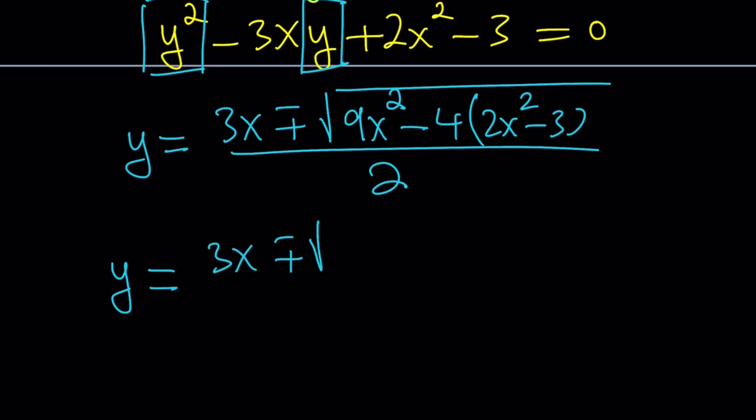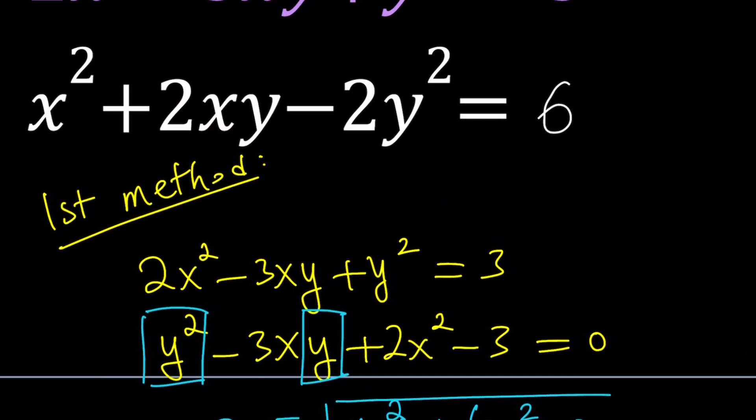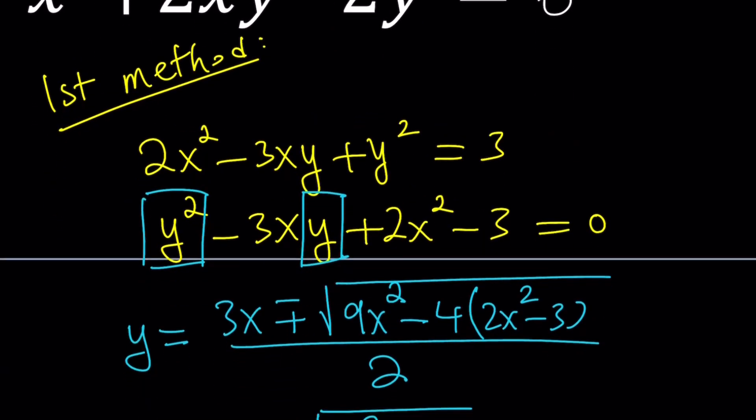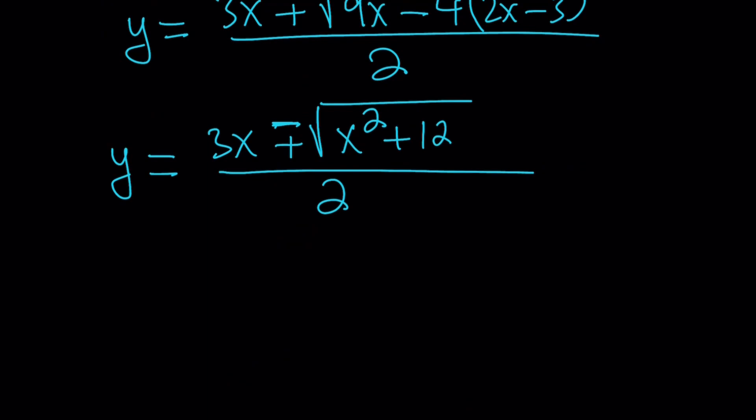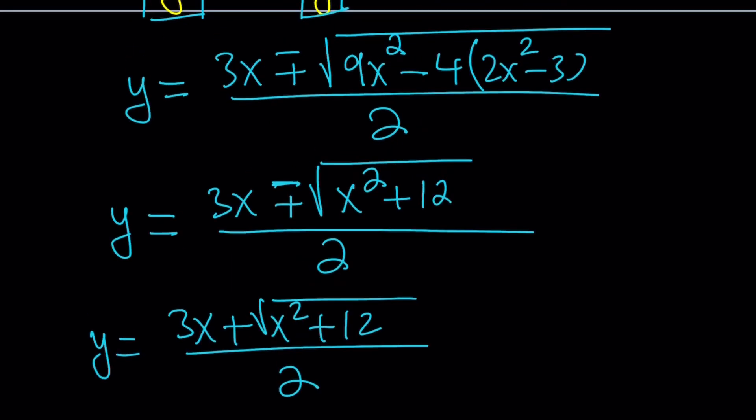3x ± so 9x² - 8x² that's going to become x² plus 12. Awesome. So that's not very nice but it's okay. There are two solutions and obviously that should give you two different values. So if you just consider the positive one or the plus one this would be the y value. Let's just do it for one of them because the other one is going to be very similar.